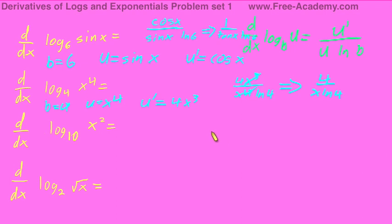As you can see, there's not just a ton of difficulty with these. Practice makes perfect. Alright, derivative of log base 10 of x squared. b equals 10, u equals x squared, and u prime equals 2x. Our derivative, then, will be 2x over x squared times the ln of 10, which simplifies to 2 over x times the ln of 10.